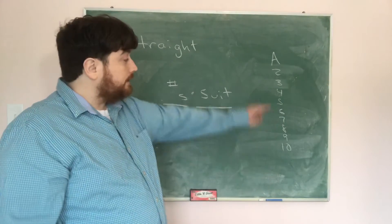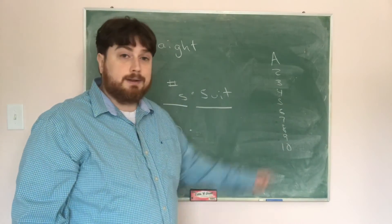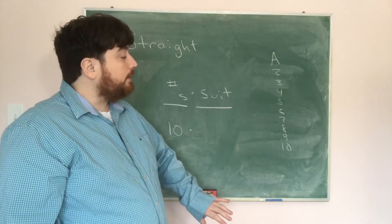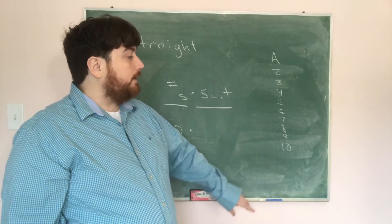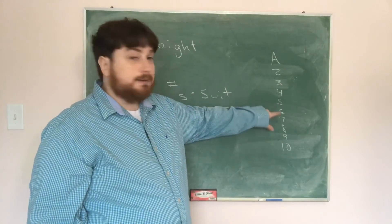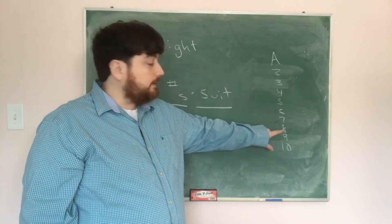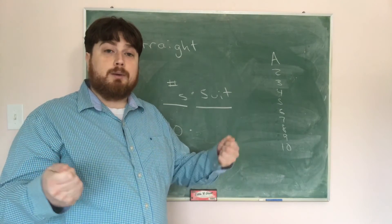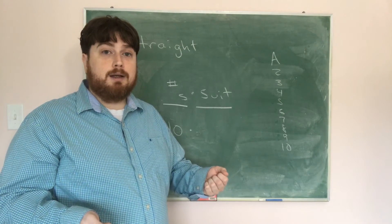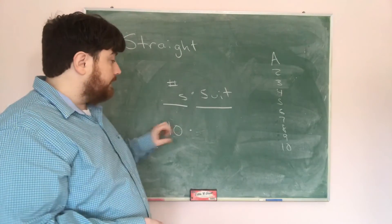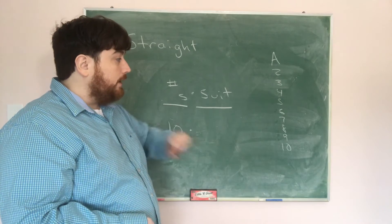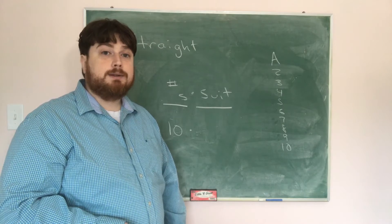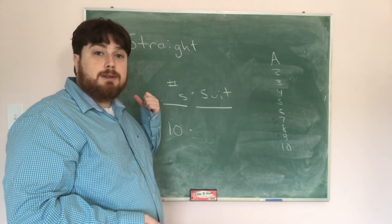Once I pick the lowest number — say five — I know the rest are six, seven, eight, nine, ten. Order doesn't matter for the numbers themselves, so we end up with just 10 distinct options for number selection, as opposed to all the orderings of those five values.